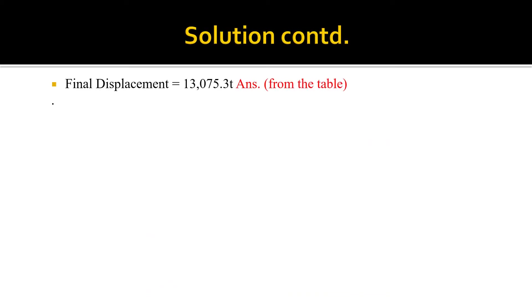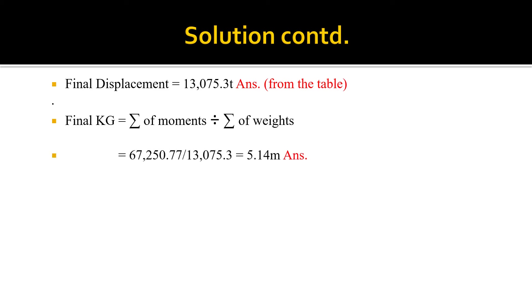Using the formula, the final displacement is 13,075.3 tons, taken from the table. To find the final KG, we divide the sum of moments by the final displacement: 67,250.77 ÷ 13,075.3, which gives us 5.14 meters as our final KG.